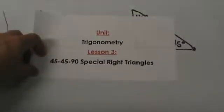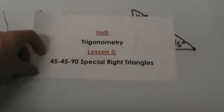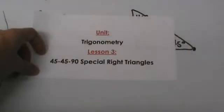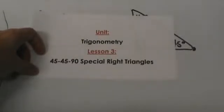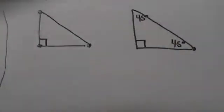Welcome to the Trig Unit Lesson 3, 45-45-90 Special Right Triangles. You only need to know one side of a special right triangle in order to find all three sides because of these special patterns. So let's learn the special patterns and talk about these.